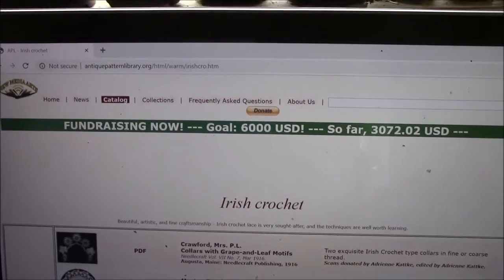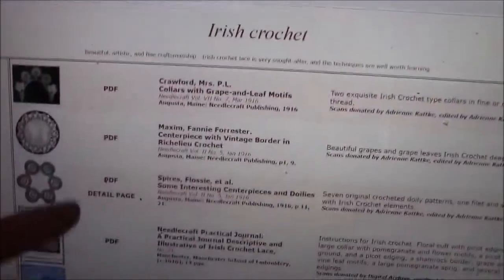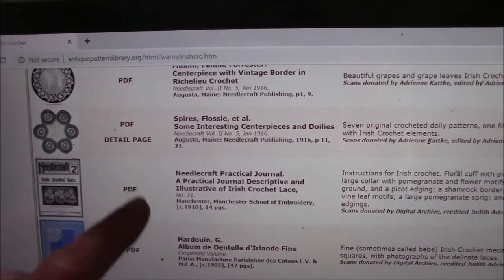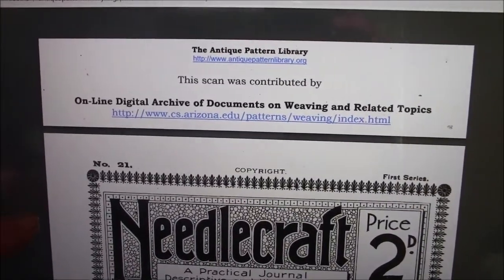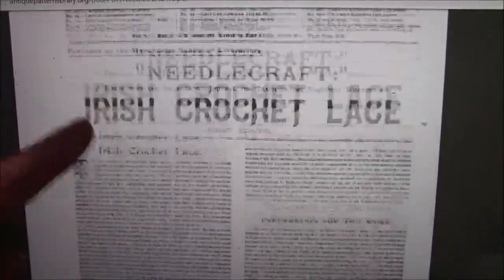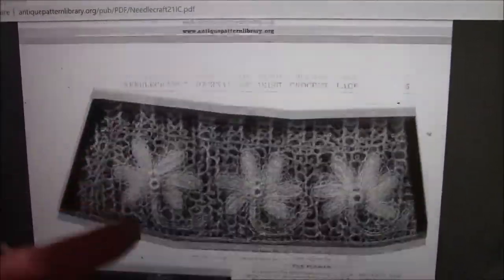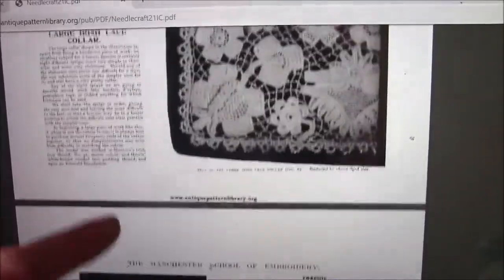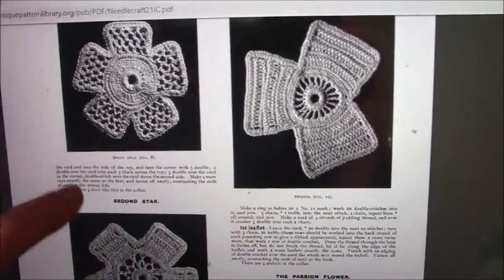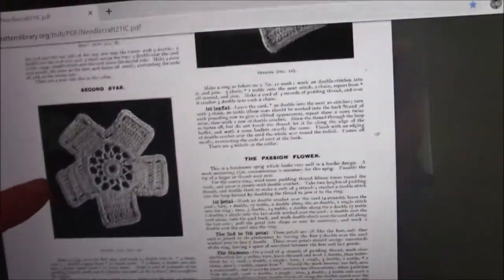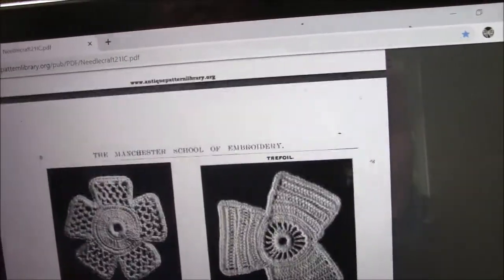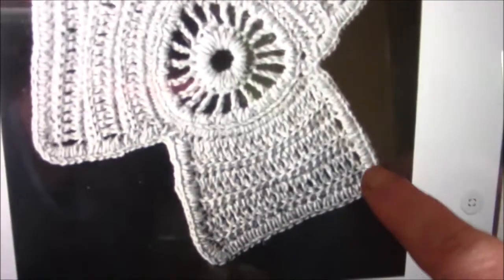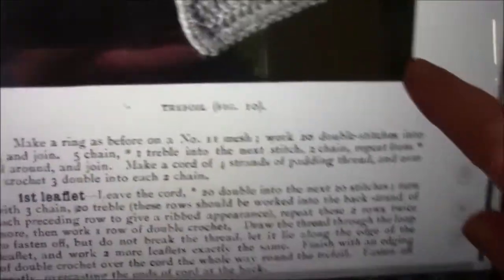So I'm again at the Antiques Pattern Library on the Irish crochet page. And here Needlecraft Practical Journal. We scroll down, and here's the flower. That's the one we're going to do. They call it trefoil. I'll just enlarge the page. As you can see it's quite simple. There's nothing too difficult about it and it all works out really well.